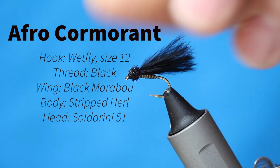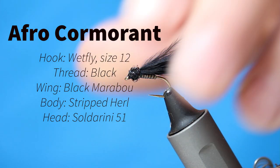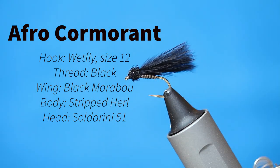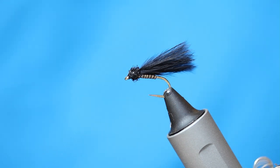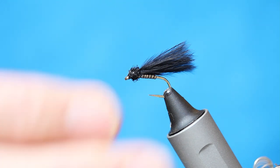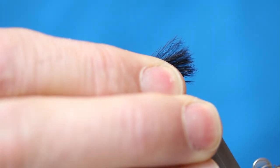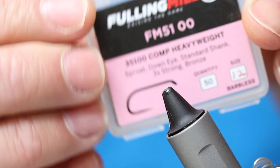And I've tied it with stripped herl, just for another, again it's a more natural looking fly really. So let's go ahead and tie. The first thing I'll do is, I like a small hook. This is a size 12, comp every way, size 12.